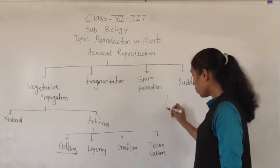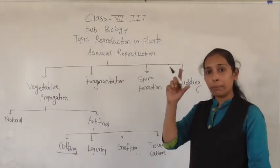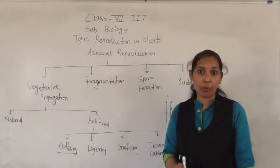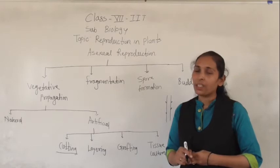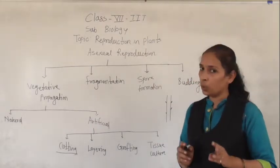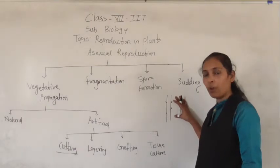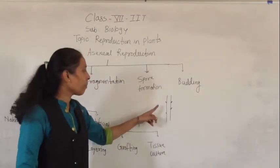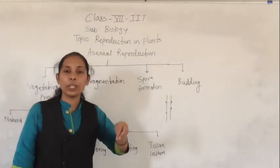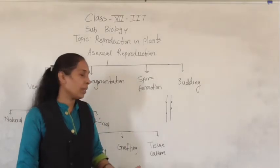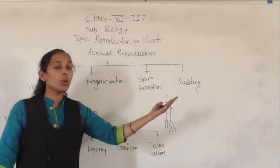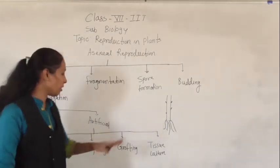The first artificial vegetative propagation method is cutting. In cutting, we take one part of the stem or a small branch that should contain buds or a node, which is very important because from the node new leaves arise. The vegetative growth of a plant depends on the node. This stem portion that we take is called a cutting. We put this cutting into moist soil, water it regularly, and after a certain period of days we can see roots forming and the cutting starting to grow as a separate new plant.